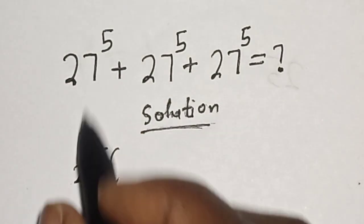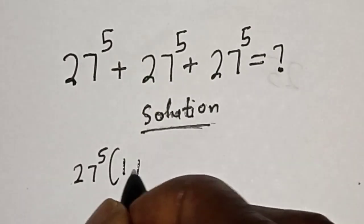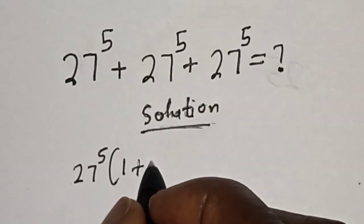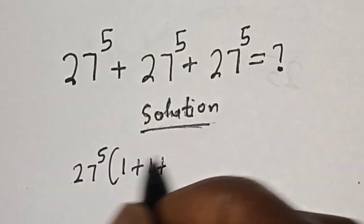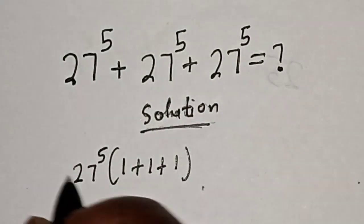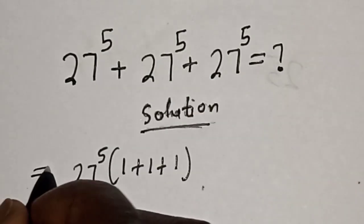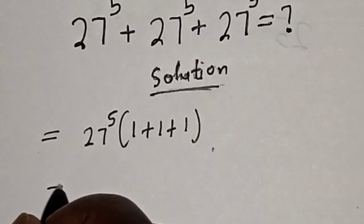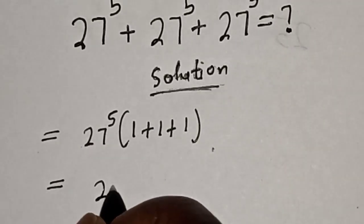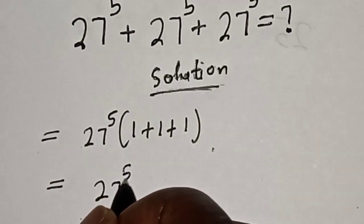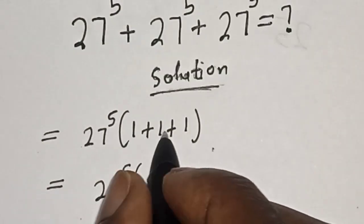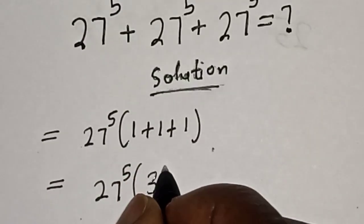This divided by this, we have one; plus this divided by this, one; plus this divided by this, one. This is equal to 27 raised to power 5, bracket one plus one plus one, that is 3.